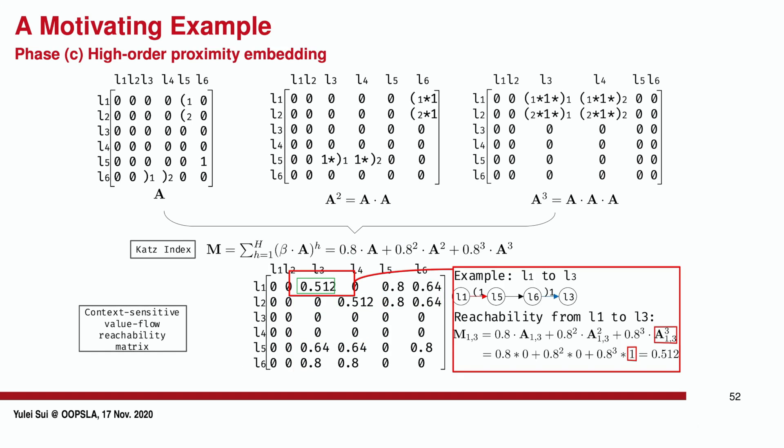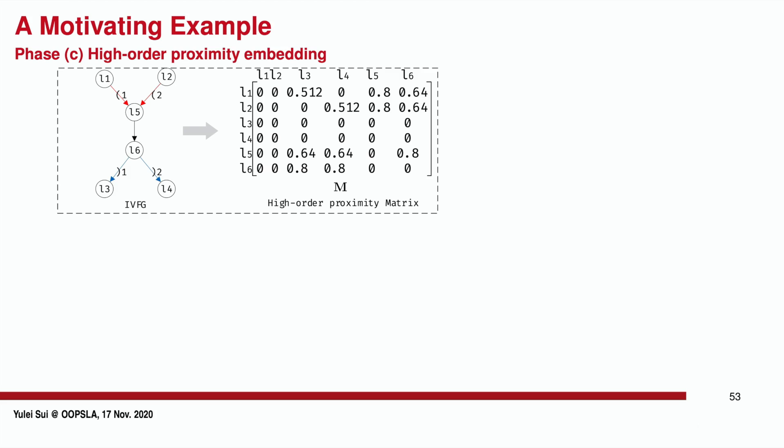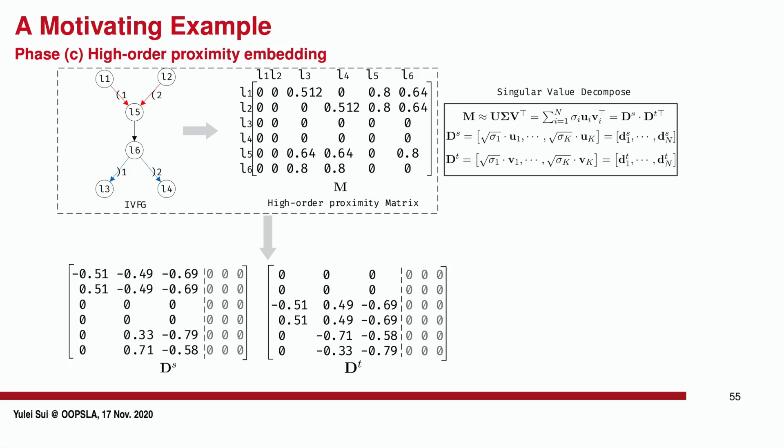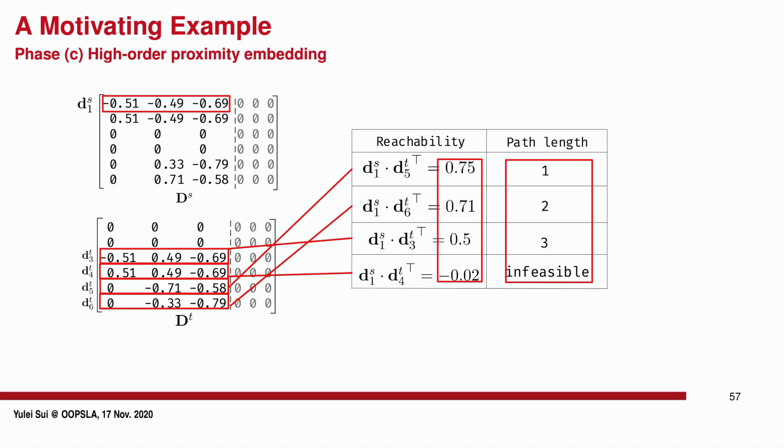There is only one feasible path here captured by A-cubed 1,3. We then decompose the high-order proximity matrix M into k-dimensional embedding vectors ds and dt, so that each node will associate a source vector and a target vector. A higher proximity value, for example, produced by the inner product between i's source vector and j's target vector, implies the more and shorter feasible value flow paths from node i to node j on the IVFG. This table lists the reachability relations precisely preserved by our embedding.